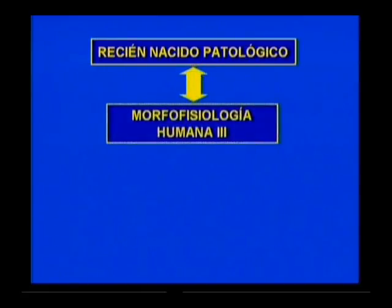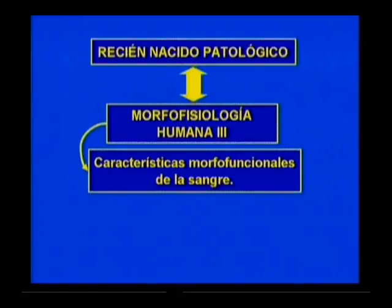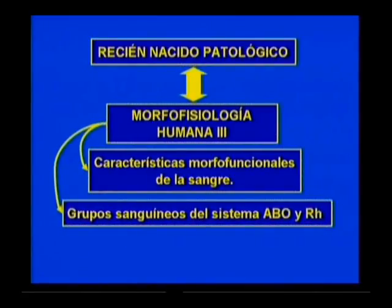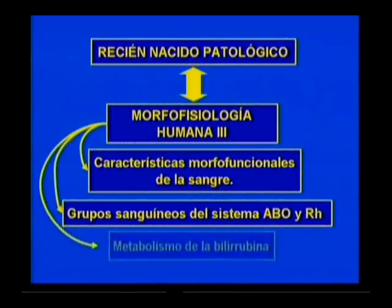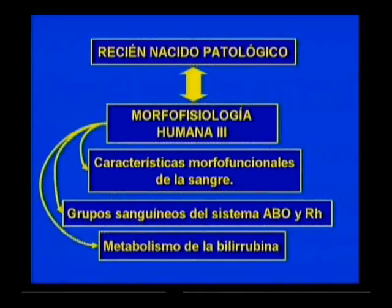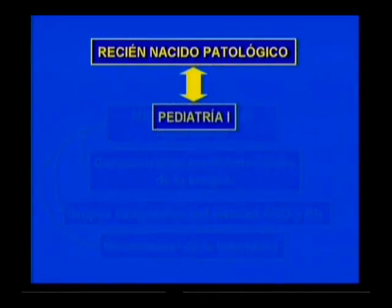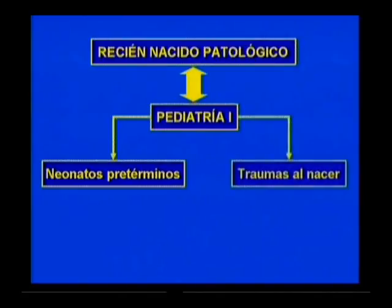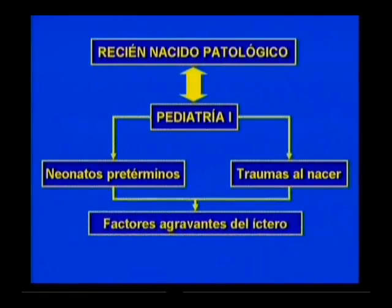Para iniciar el estudio de estas patologías, debes recordar que en Morfofisiología Humana 3, tema 3, estudiaron los aspectos morfofuncionales de los componentes de la sangre, los grupos sanguíneos del sistema ABO y del sistema RH, y los elementos relacionados con el ictero como manifestación de las alteraciones del metabolismo de la bilirrubina. También se trataron las características de los neonatos pretérminos, y estos, al igual que los traumas al nacer —fundamentalmente la bolsa serosanguínea y el céfalo hematoma—, constituyen factores agravantes del ictero.